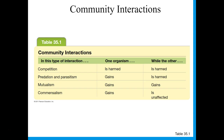Mutualism: both species gain — the example being those oxpecker birds. And commensalism: one species gains and the other doesn't really care, it didn't do anything for them. So that would be the example of those cattle egrets — the cattle egrets get the bugs and the cattle's lives just don't change at all.